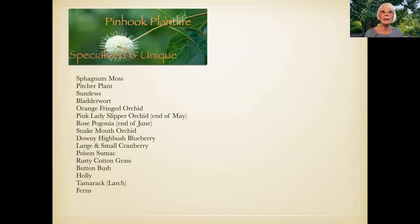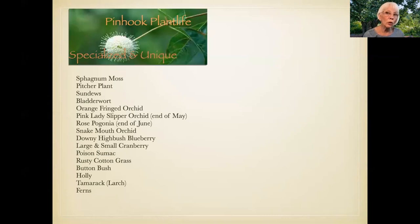Button bush grows in what's called the moat of the bog, at the perimeter. The water there is dilute because of the runoff, so the plants that grow in the moat are plants that don't like it quite so acidic — like button bush and arum plants. One last thing that grows at Pinhook: the carnivorous plants.